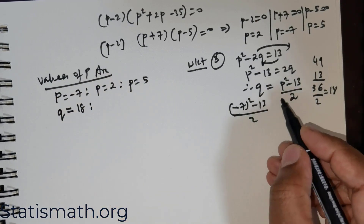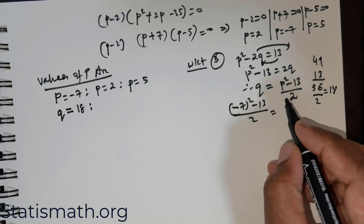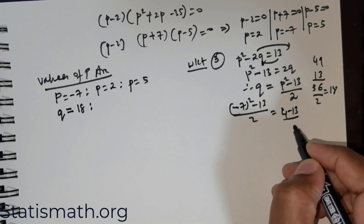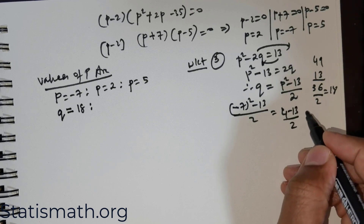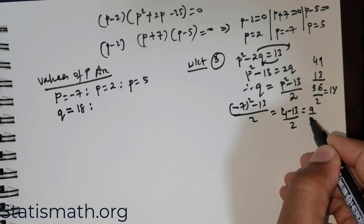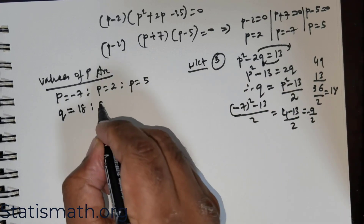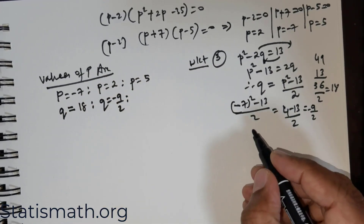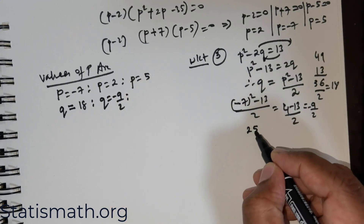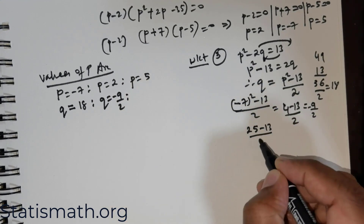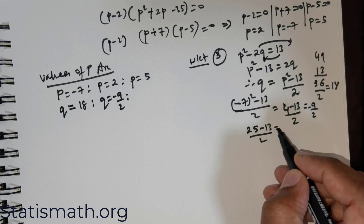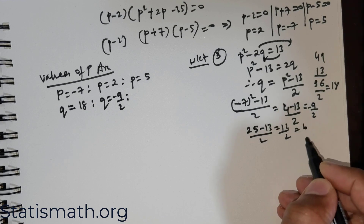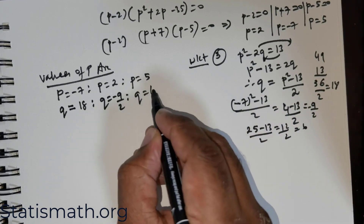When p = 2: q = (4 − 13) / 2 = −9/2. And when p = 5: q = (25 − 13) / 2 = 12 / 2 = 6. So q = 6.